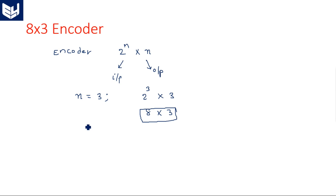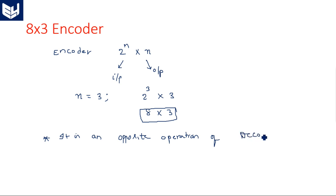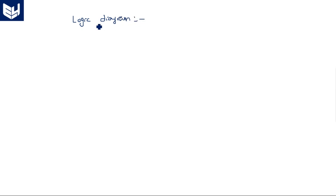The main function of the encoder is to convert a higher order bit into a lower order bit — that means it is the opposite action of the decoder. I am saying this because we have already studied the 3 to 8 decoder in previous videos, and also the IC 74LS138 decoder. So if you understand that concept, this is very easy.